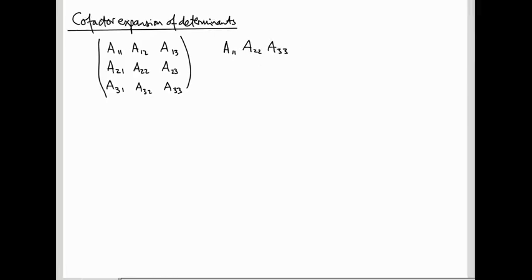Another choice: A11 from the first row, A23 from the second row, and A32 from the third row. And that one will come with a minus sign.